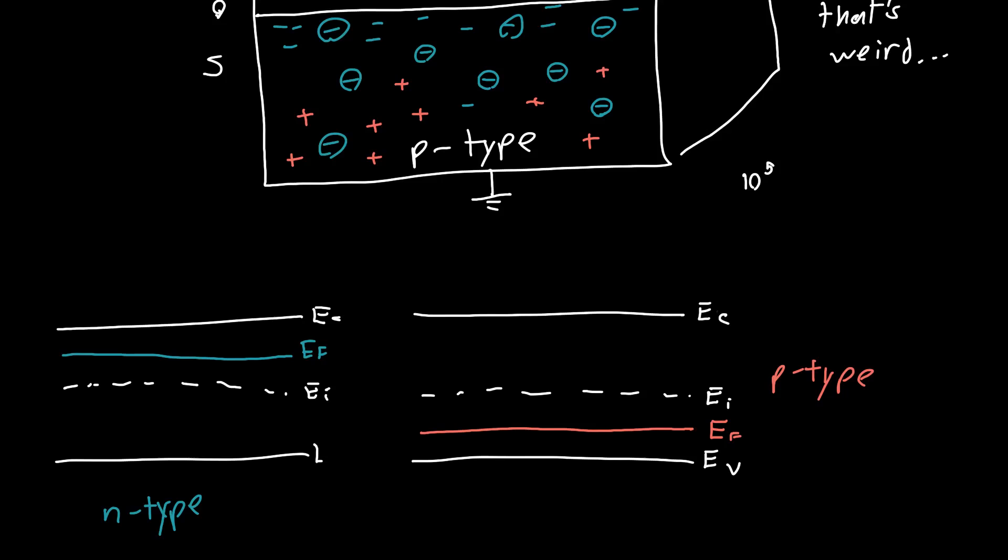We've got Ec, Ei, and Ev and we know that we can cause band bending in our p-type semiconductor. So if we cause the bands to bend a lot, then what we end up with near the edge, if we have a lot of band bending, what we end up with is near this edge very close to this edge the band diagram actually looks like an n-type semiconductor.